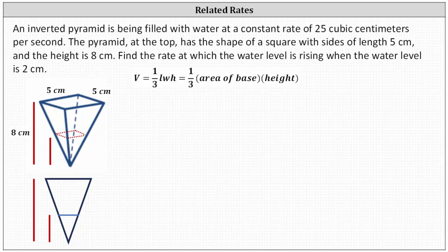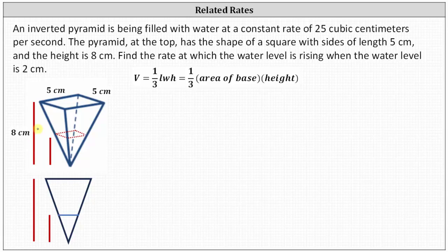An inverted pyramid is being filled with water at a constant rate of 25 cubic centimeters per second. The pyramid at the top has a shape of a square with sides of length five centimeters and the height is eight centimeters. We have an upside down pyramid where the base is a five by five centimeter square and the height is eight centimeters, being filled with water at a constant rate of 25 cubic centimeters per second. We're asked to find the rate at which the water level is rising when the water level is two centimeters.